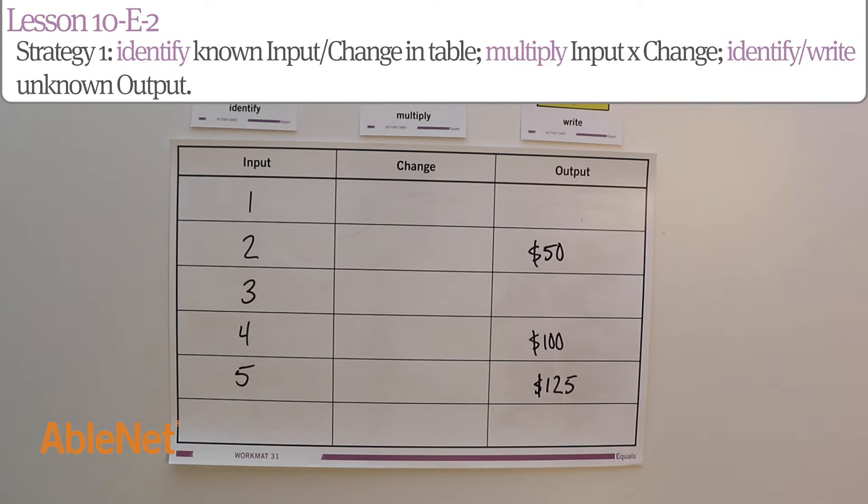For our first strategy, we're going to identify the known input and change in a table, multiply input times change, then identify and write the unknown output.